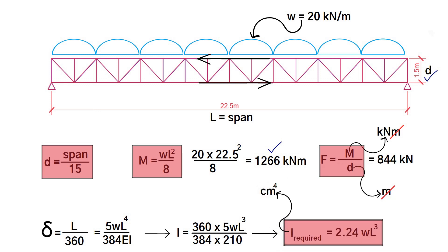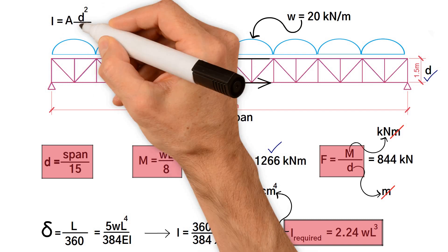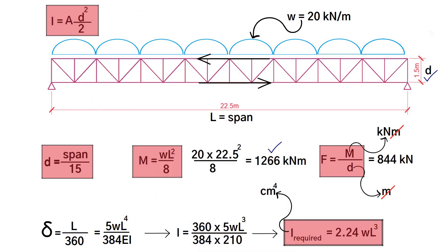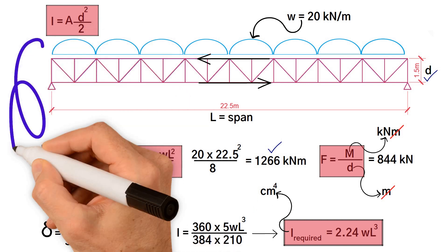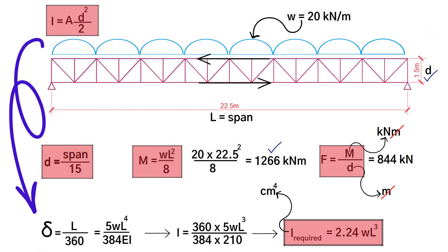There's a great formula that will tell you the I value of a truss: the area of the top or bottom chord multiplied by the depth squared over 2. After you've preliminarily sized your top and bottom chord based on the axial force, you can find your I value and compare it with I required, making sure the deflection is not greater than span over 360.